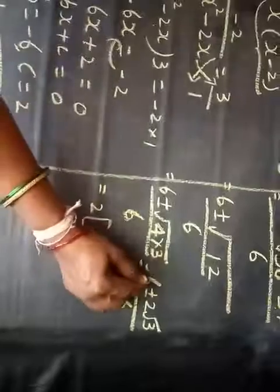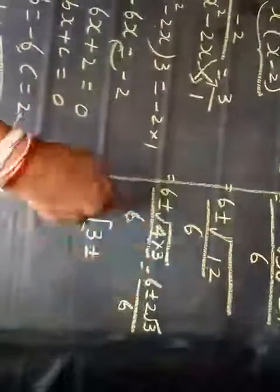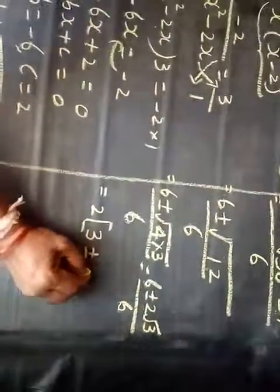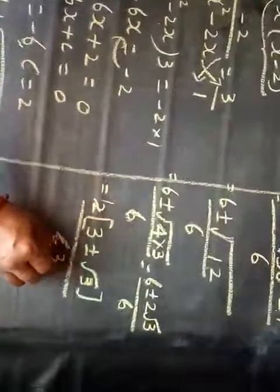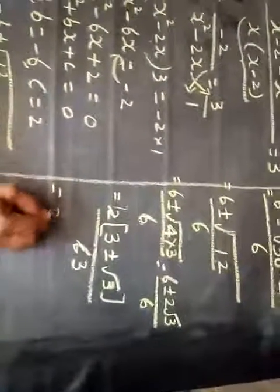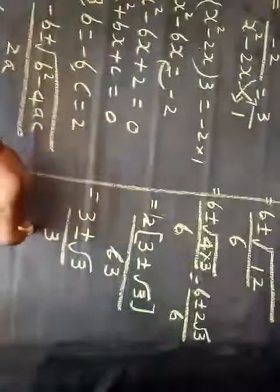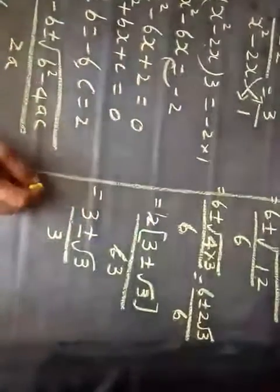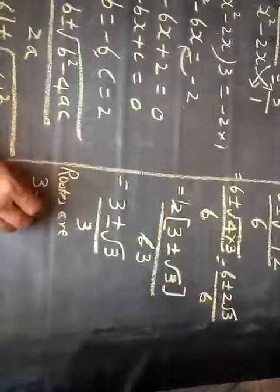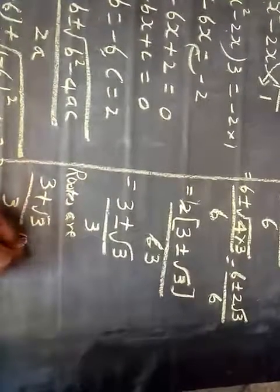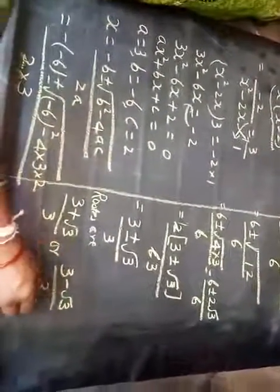Now take 2 as a common factor: 2 ones are 2, 2 threes are 6, so 2 can be taken as common. Writing 3 plus or minus root 3, with 2 already outside so it won't come again, divided by 6. The 2 threes cancel, leaving the answer as 3 plus or minus root 3 by 3. The two roots are: 3 plus root 3 by 3, and 3 minus root 3 by 3.